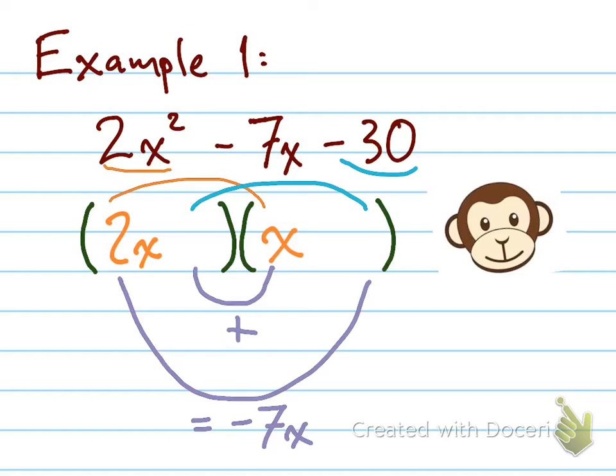Now, negative 30, however, has a couple of different ways that we could get negative 30. I'm just going to pick one, like 3 times 10. Now, it's negative 30 there in our trinomial. So one of those numbers has to be negative. I'll keep that in mind, but I'm not going to try to figure it out just yet.